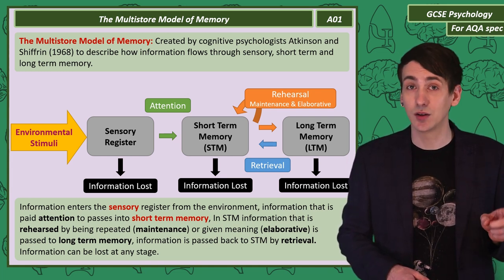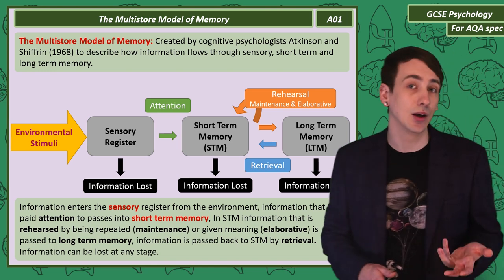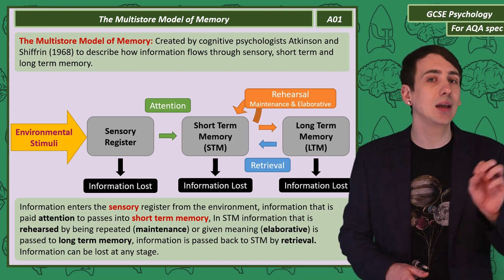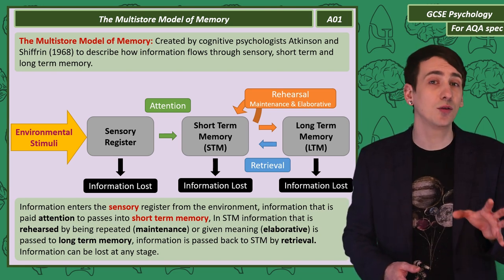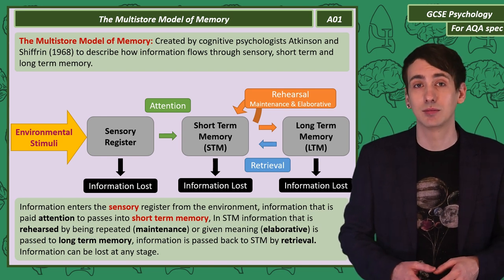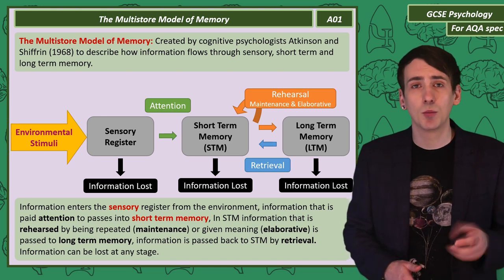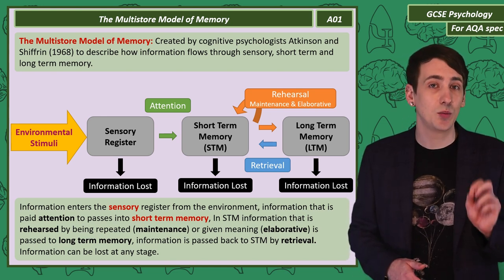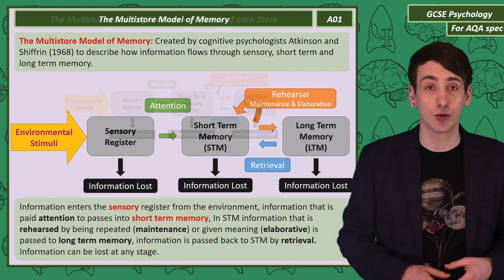The first type of rehearsal is maintenance — so you might repeat a name again and again to learn it. The second is elaborative — this is when you think about the meaning of what you're trying to remember. You may think about how a new fact you just learned in class is linked to other things that you know. Once information is in long-term memory, it can be lost, but if we want to use it we need to bring it back into short-term memory. That's called retrieval.